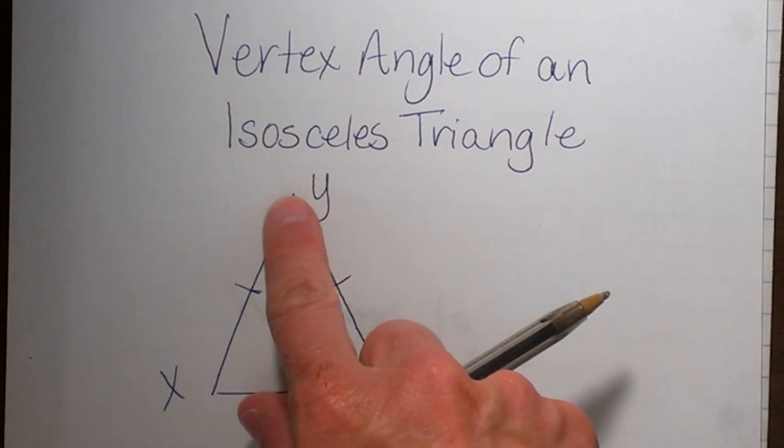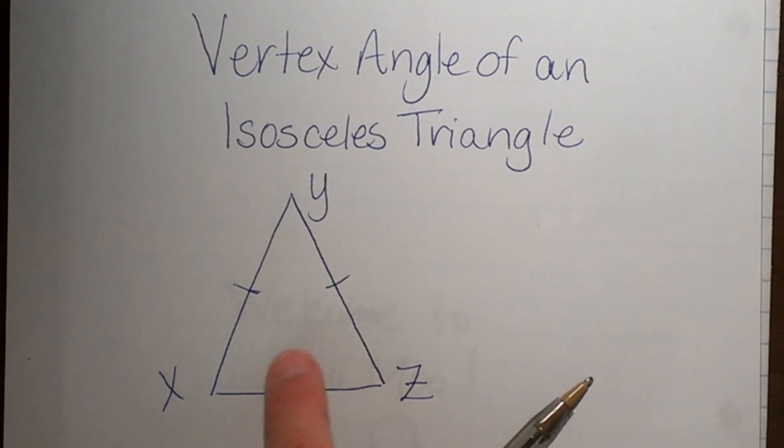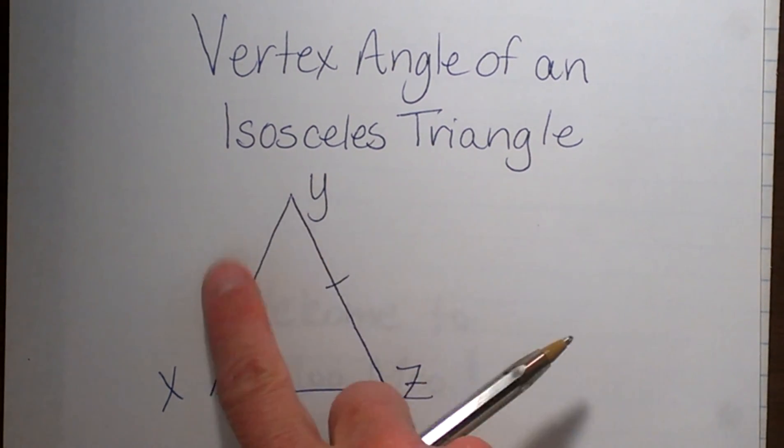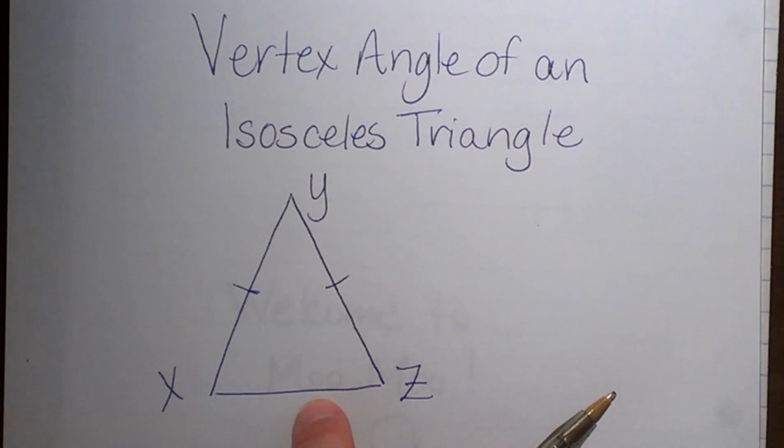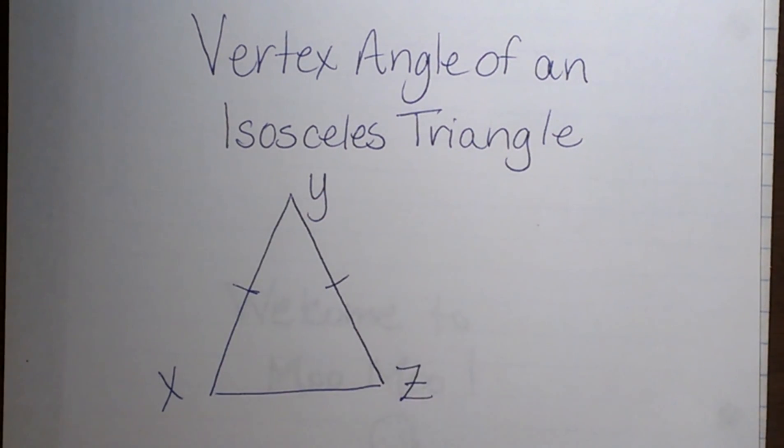It is a triangle that has two congruent sides and one other side. Sometimes this third side can actually be congruent, so an isosceles triangle could possibly be an equilateral triangle. But typically you just see two equal sides and not the third one.